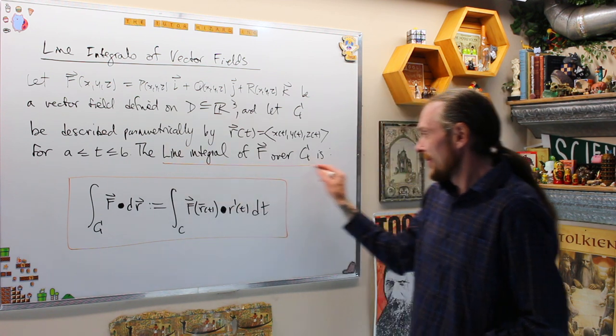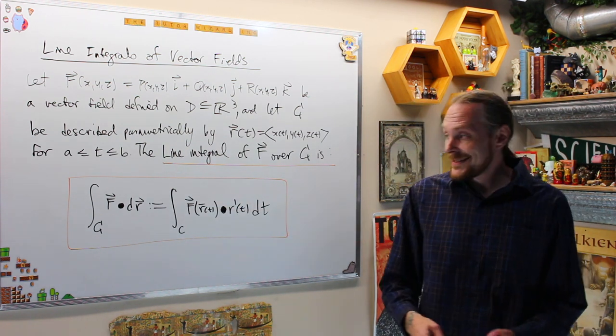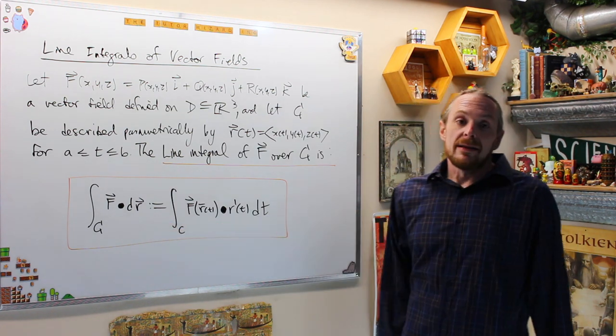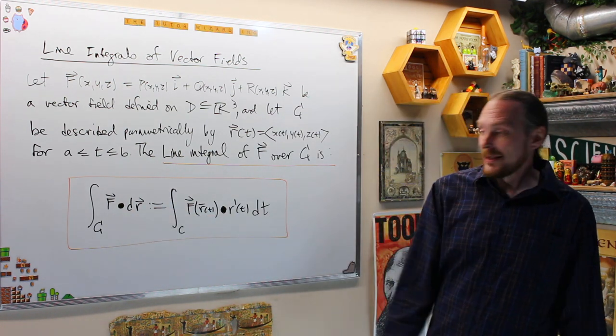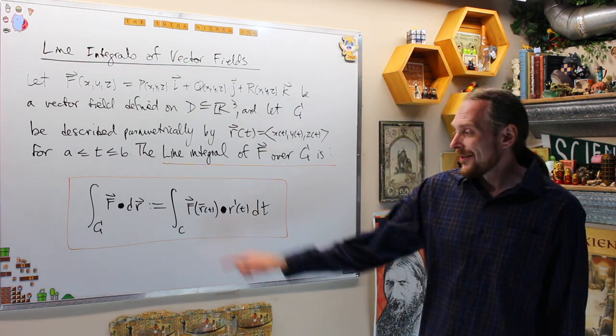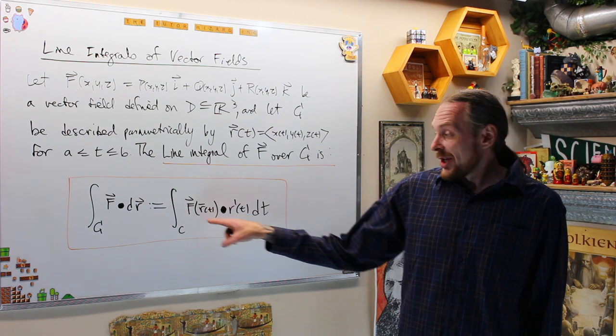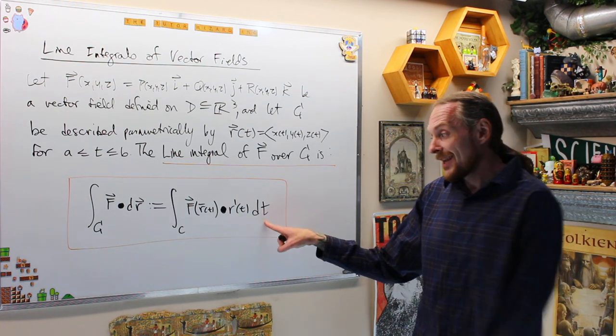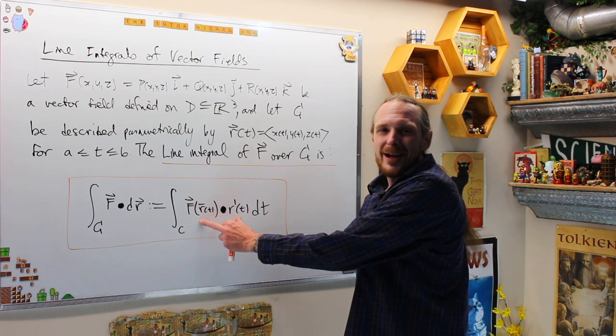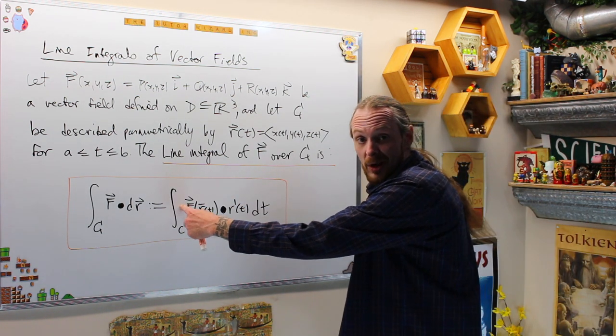Then, the line integral of this vector field F over this curve C is the integral F dot product dr, defined as the integral of this vector function F of R of T dot product with this vector function R prime of T, dt. Remember, dot product takes two vectors and creates a scalar in T, and then I have an integral, which is one-dimensional.